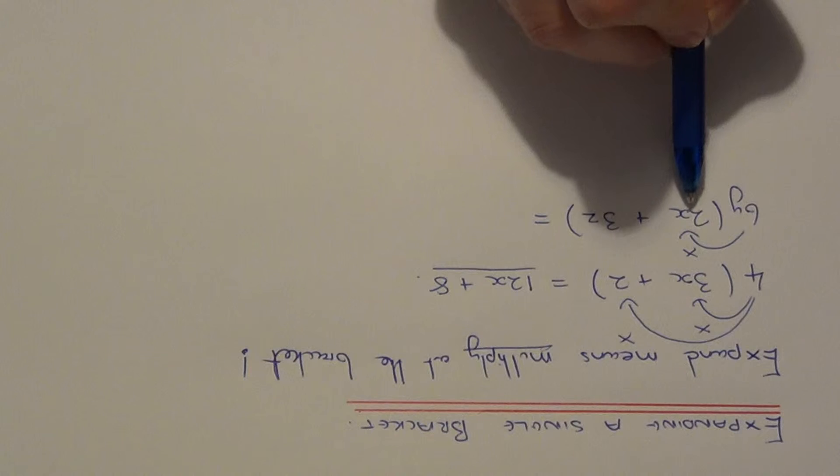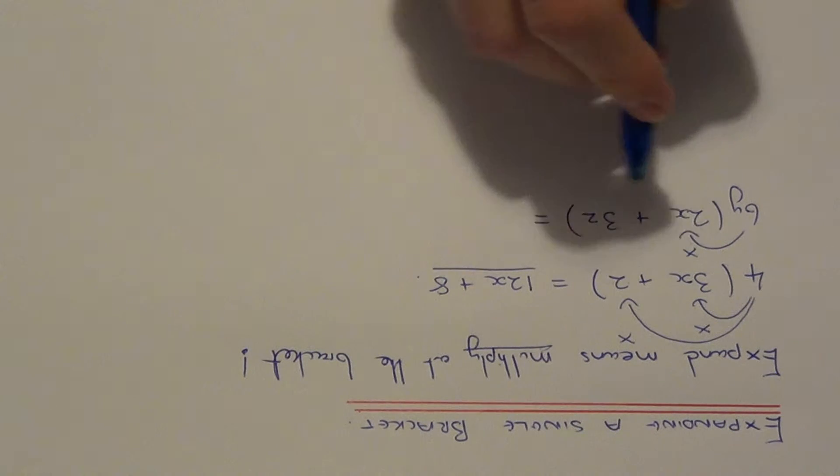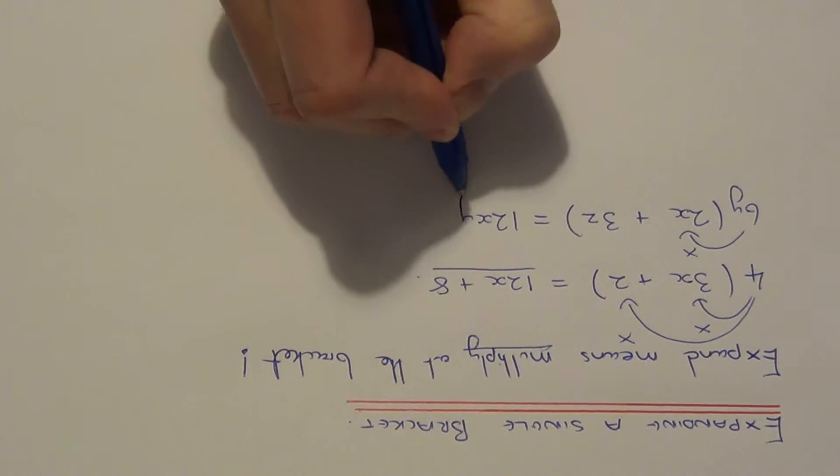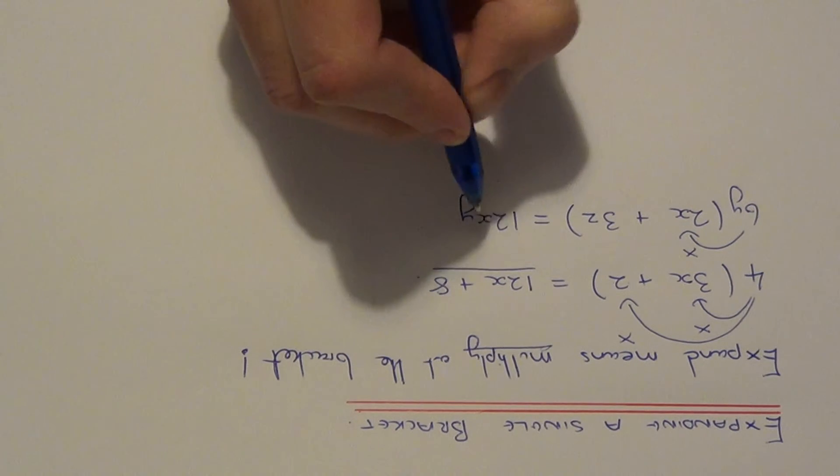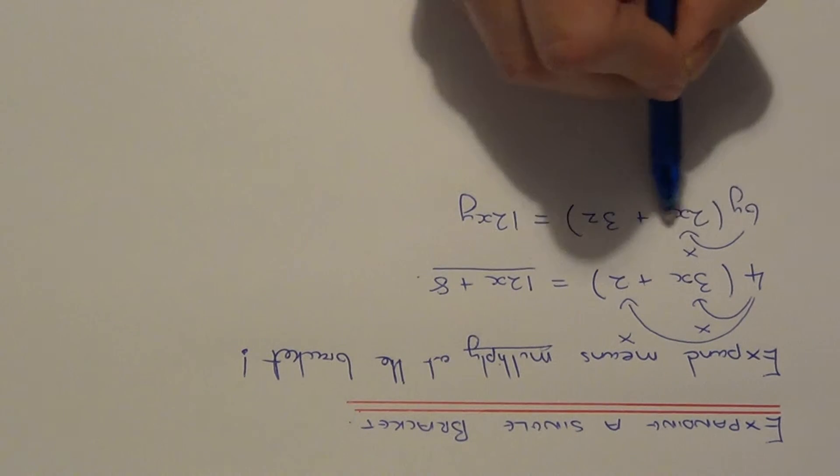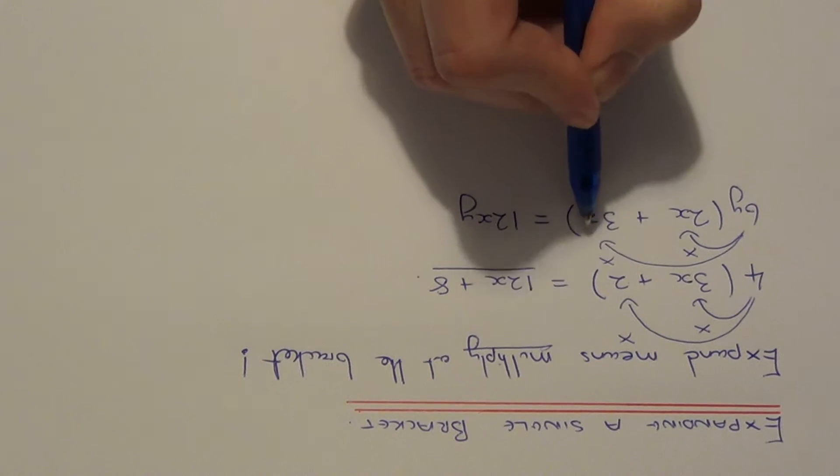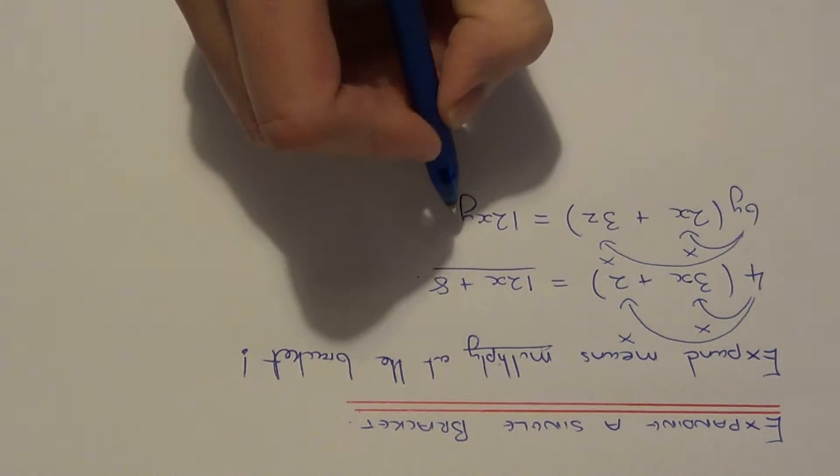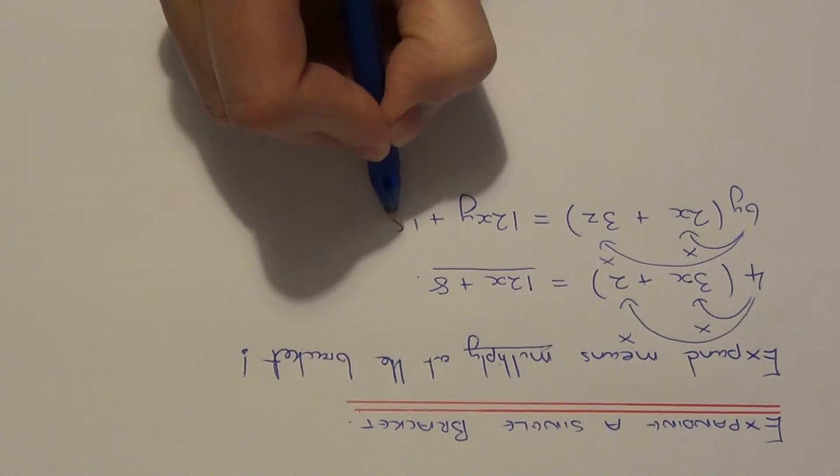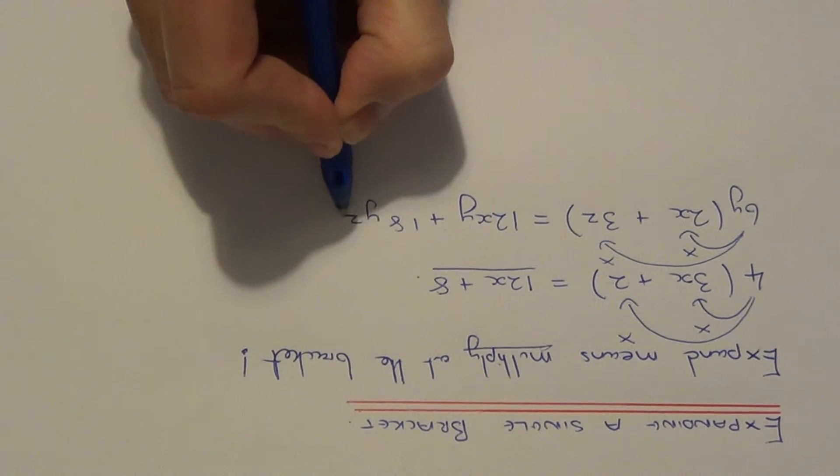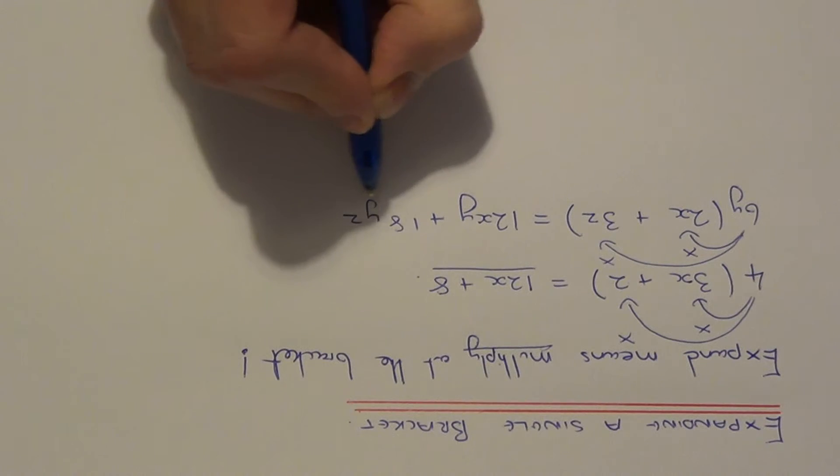This will give you 12xy. Make sure you put the letters in alphabetical order at the end. Also the 6y has to multiply the 3z, so we do 6y times 3z. This will give us 18yz. Again make sure you've got the letters in alphabetical order.